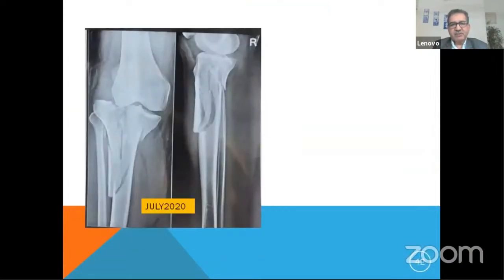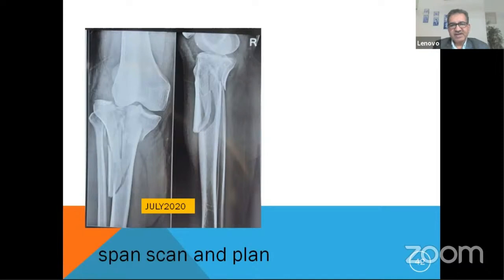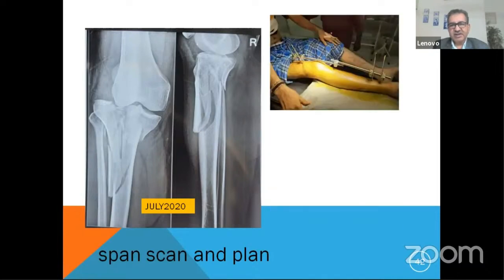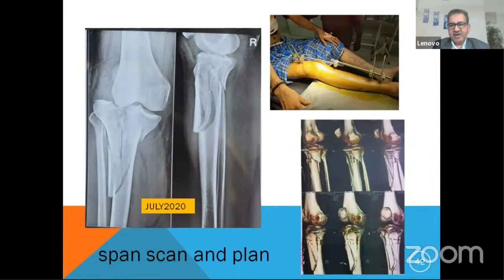But now in July 2020, as the principle goes: span, scan, and plan. First, put an external fixator emergently in the OT. We now advocate putting the fixator anteriorly in about 10 degrees of flexion and distract the fracture. Let the patient go home the second day — economically cheaper — and come back after 10 days. Get a CT scan meanwhile, and from it you know where the fragments are, which approach to take, and where to attack first.